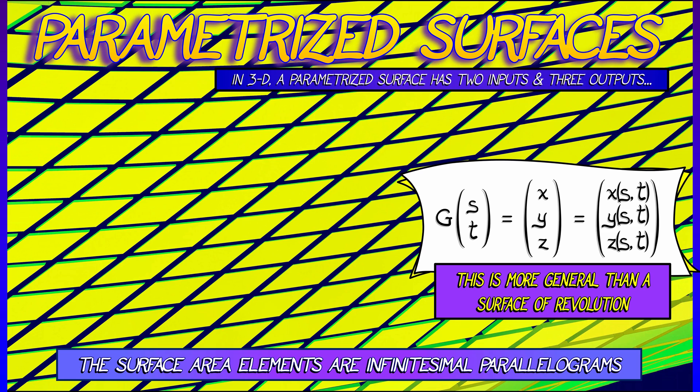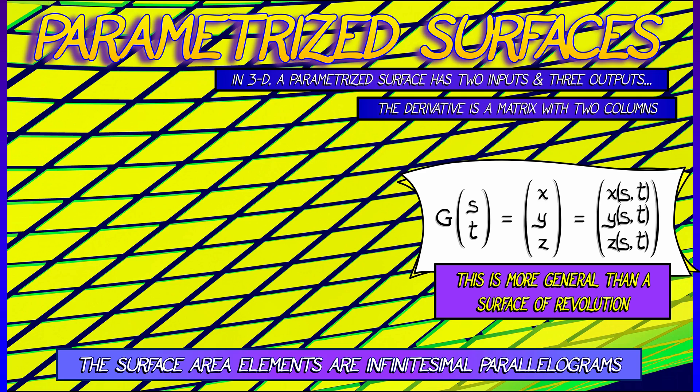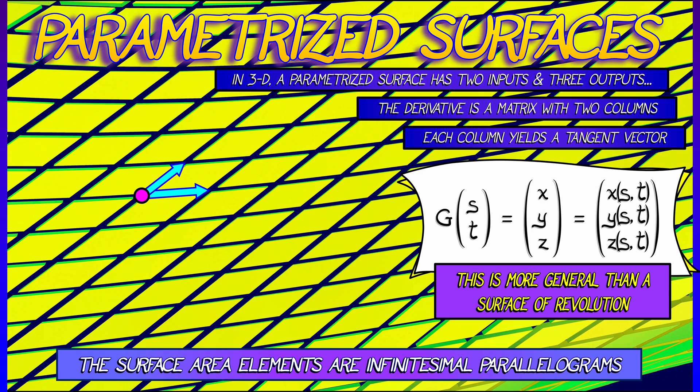Now to get at the surface area element, we look at the derivative of g. That's a matrix with two columns, three rows. Each of those columns is an infinitesimal tangent vector that generates some parallelogram.